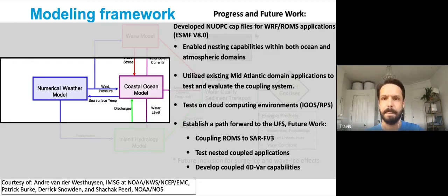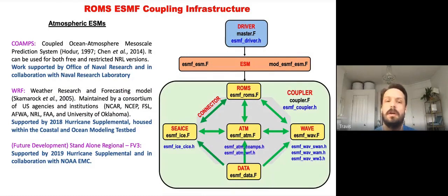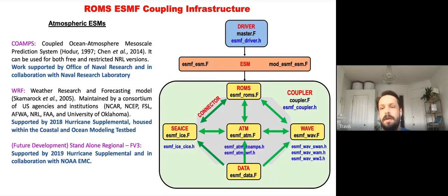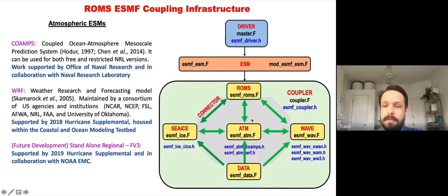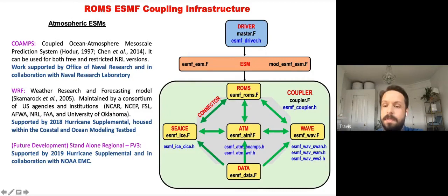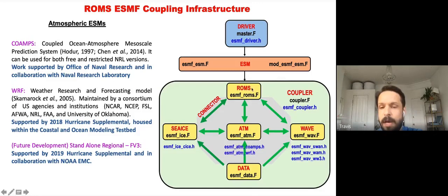Much of this work leveraged Hernan's prior work coupling ROMS with the Navy COAMPS model with ONR and NRL, which accelerated our progress with ROMS and WRF. From the ROMS perspective, the different model components are the ocean model ROMS, an atmospheric model such as COAMPS or WRF, and a data layer for where grids don't match up. Wave components and sea ice are currently being developed.